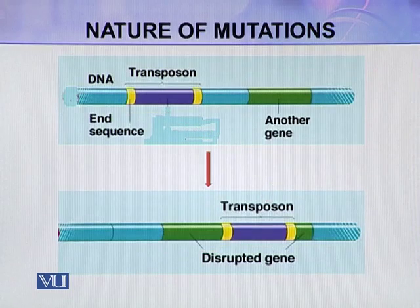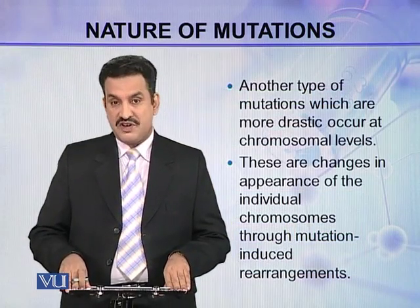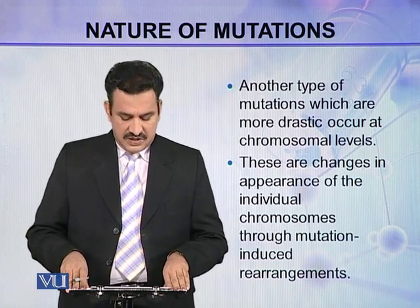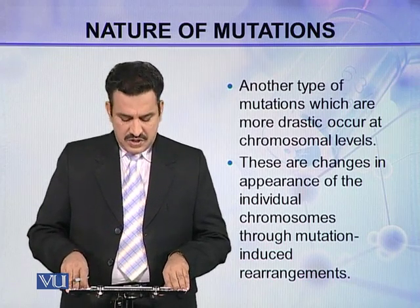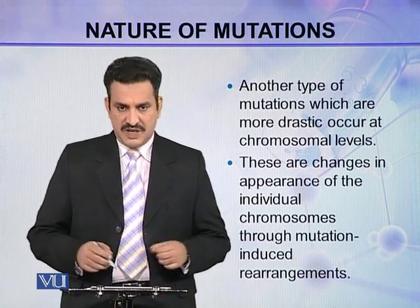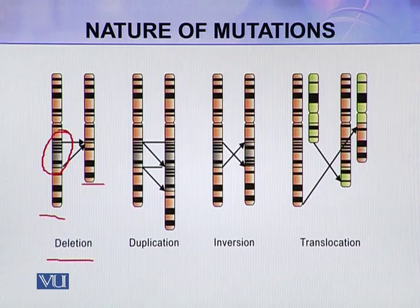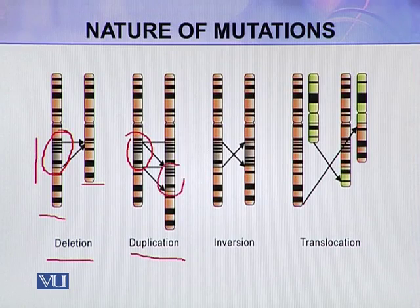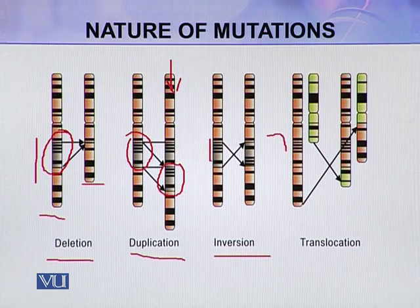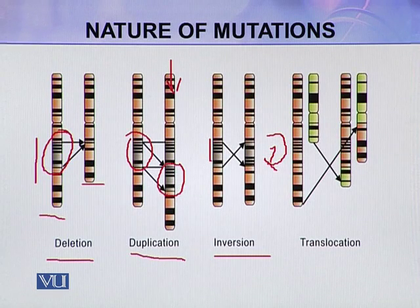Another type of mutation, which is more drastic, occurs at the chromosomal level. These are changes in the appearance of individual chromosomes through mutation-induced rearrangements. In the case of deletions, a region is totally deleted from the chromosome, so the mutated chromosome is lacking that portion. In duplication, a portion is duplicated, so the mutated chromosome has a double copy of that particular sequence. In the case of inversion, a sequence is inverted in the opposite direction. Such mutations are called inversions.